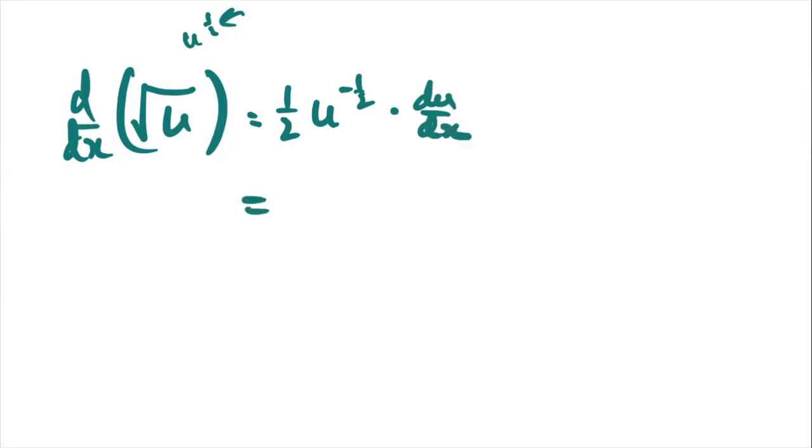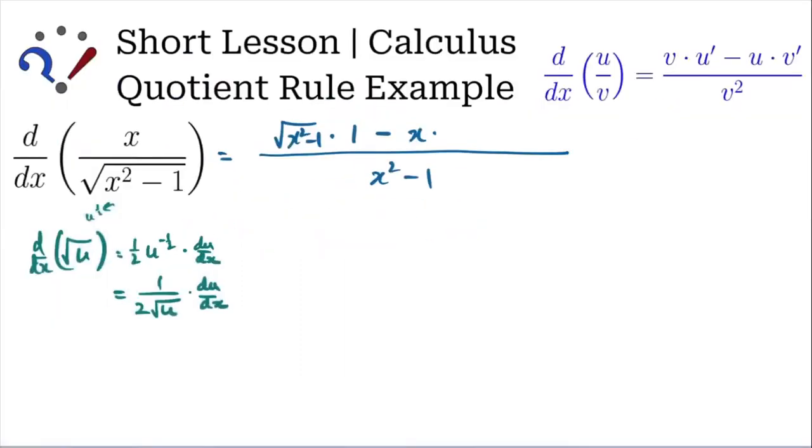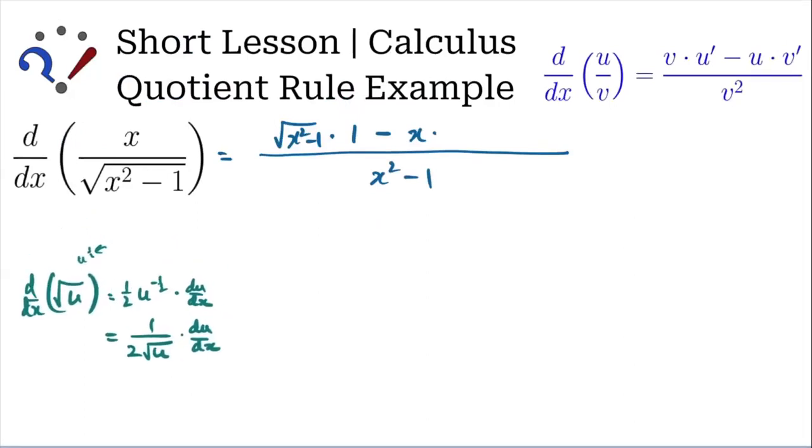And I like to just memorize this as a 1 over 2 square root of the u times d u dx. Because this happens quite often, I just do it this way. So let's know the shortcut of that. And when you do that, we end up with 1 over twice the square root of the x squared minus 1. And the derivative of the inside, x squared minus 1, is 2x. And as you could tell, the 2s cancel.